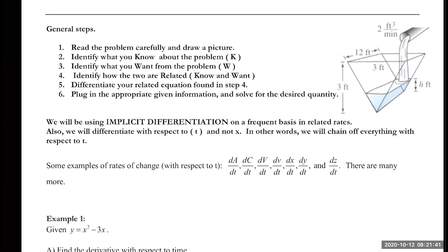You're going to create a Know, Want, and Relate column. The Know column holds all information given about the situation. The Want column identifies what the question asks you to solve for — the rate of change of height, radius, etc. The Relate column is how you connect all variables in one equation, then take derivatives from there.